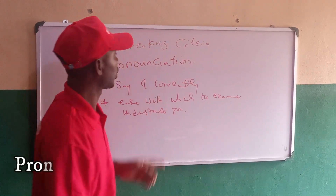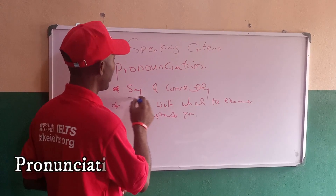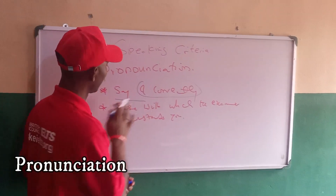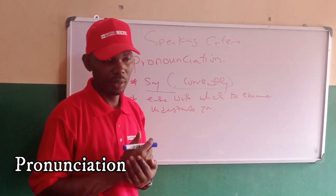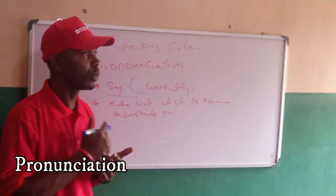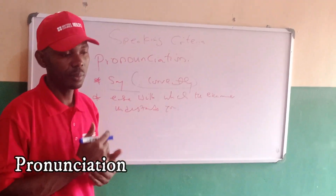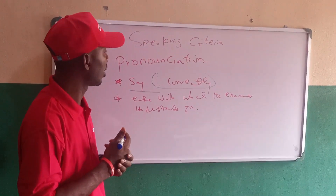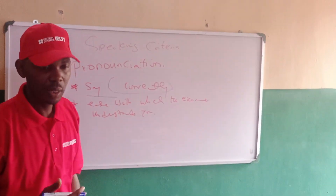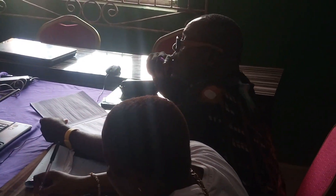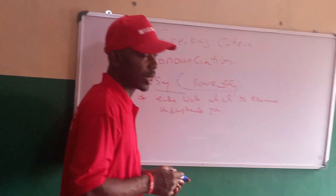Under pronunciation, take note of two things. The first is your ability to say a word correctly — that is the first thing being looked at under pronunciation as a speaking criterion. The advice here is that any word you have an issue pronouncing, avoid using during the exam. The second thing is the ease with which the examiner understands you.